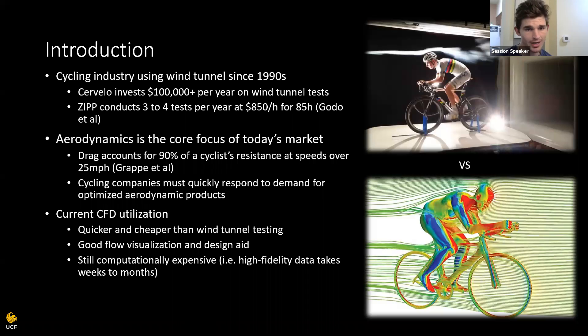And this is because drag accounts for 90% of the cyclist's resistance at speeds over 25 miles per hour. So if you're racing, this matters. And cycling companies have to quickly respond to this demand for optimized aerodynamic products, which is where CFD comes in. And companies like Cervelo are using CFD all over the place because it's quicker and it's cheaper than wind tunnel testing. And it's a good flow visualization and design aid. However, it's still computationally expensive. In other words, high fidelity data takes a long time.